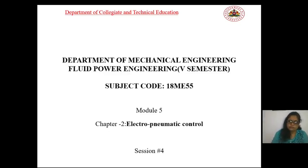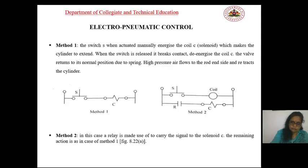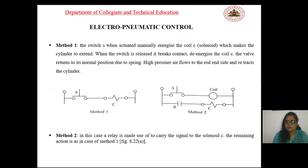Welcome to Session 4: Electro-Pneumatic Control System. In Method 1, the switch S, when activated manually, energizes the coil C, which makes the cylinder extend. When the switch is released, it breaks the contact and de-energizes the coil C. The valve returns to its normal position due to the spring, and high-pressure air flows to the rod side and retracts the cylinder.